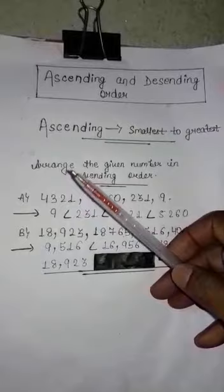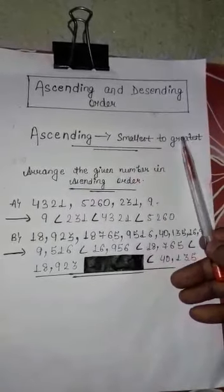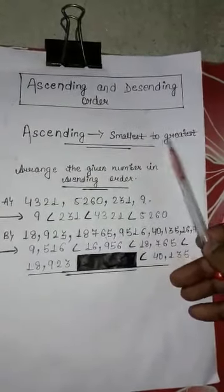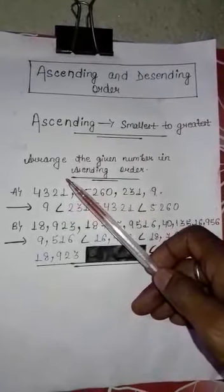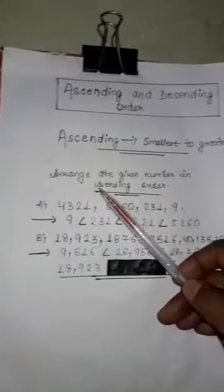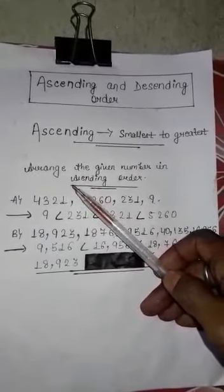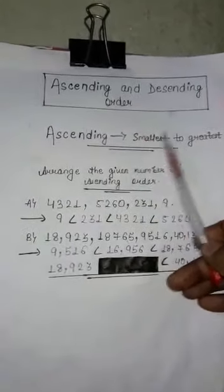Ascending means smallest to the greatest, from small to large. So ascending order means arranging the given numbers in increasing order. It means from the smallest to the greatest.